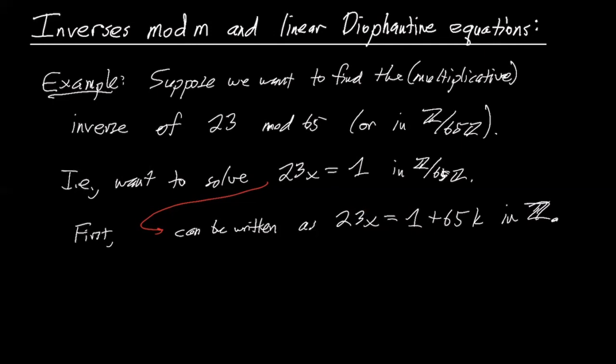I'm just going to rearrange this, rearrange as 23x plus 65y equals one. So really, subtracting this over would be minus 65k. So I'm just pretending y is negative k here, or I can just basically absorb the minus sign into the variable, it's fine, it's a variable.